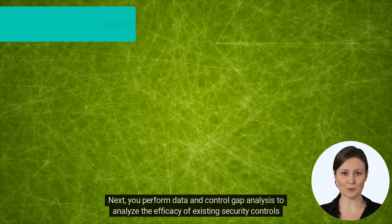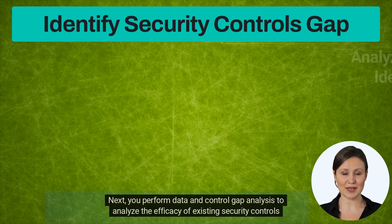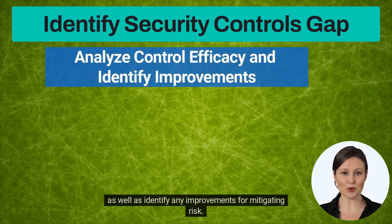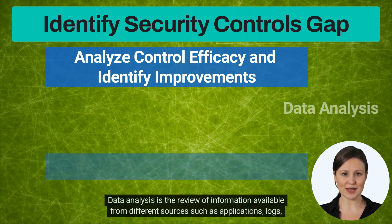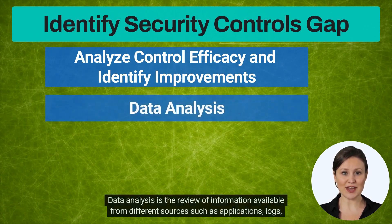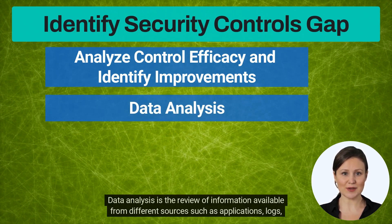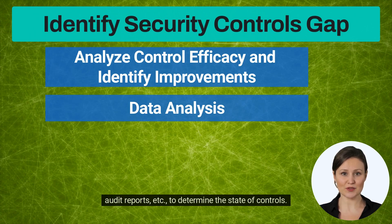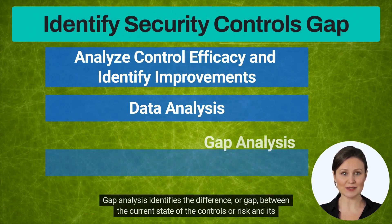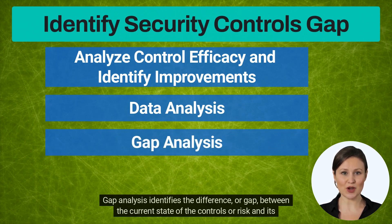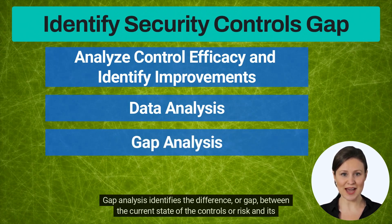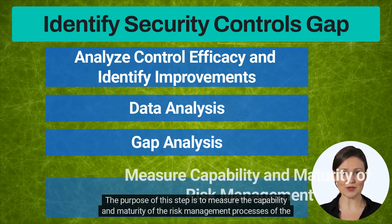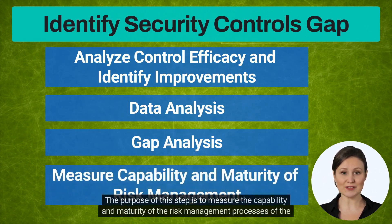Next, you perform data and control gap analysis to analyze the efficacy of existing security controls, as well as identify any improvements for mitigating risk. Data analysis is the review of information available from different sources such as applications, logs, and audit reports, to determine the state of controls. Gap analysis identifies the difference or gap between the current state of the controls or risk and its desired state. The purpose of this step is to measure the capability and maturity of the risk management processes of the organization.